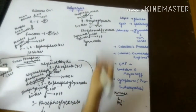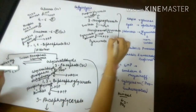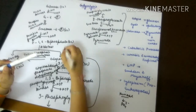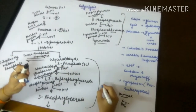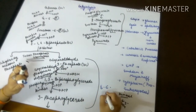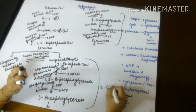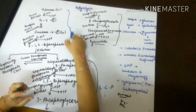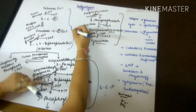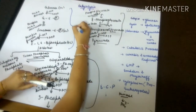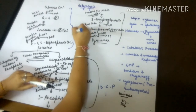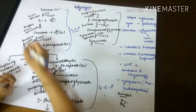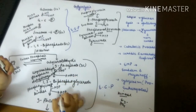The cycle converting glyceraldehyde-3-phosphate to pyruvate is an energy-conserving process. The pathway converting glucose to fructose-1,6-bisphosphate is an energy-spending process because ATP energy is being used. In the later steps, ATP is being produced.